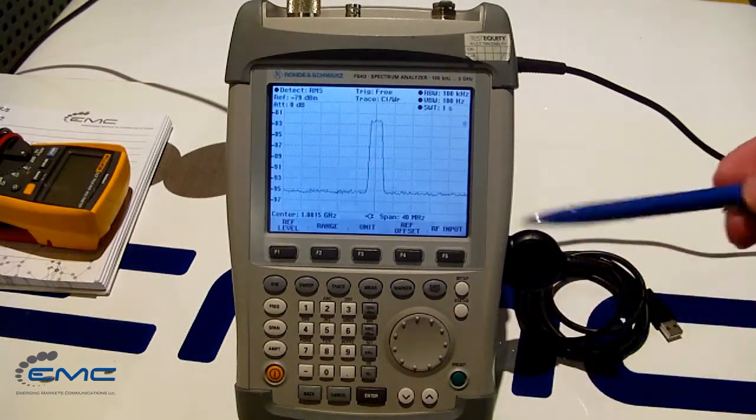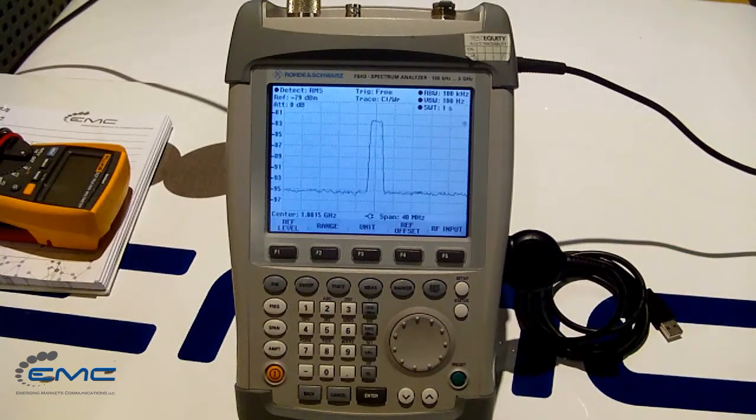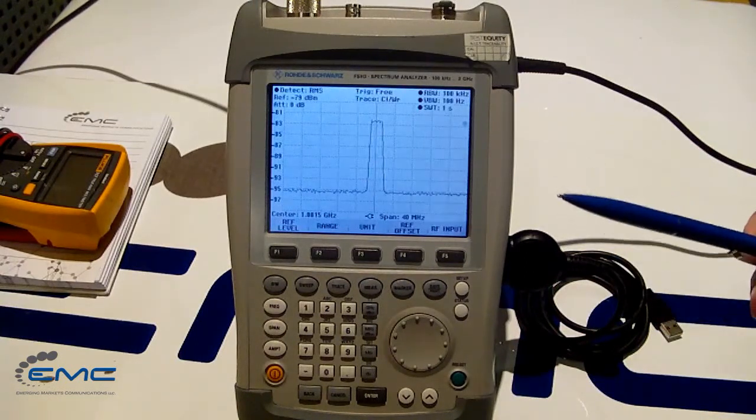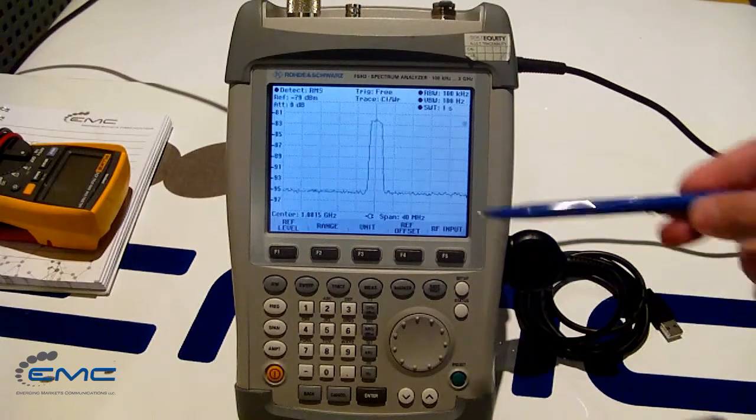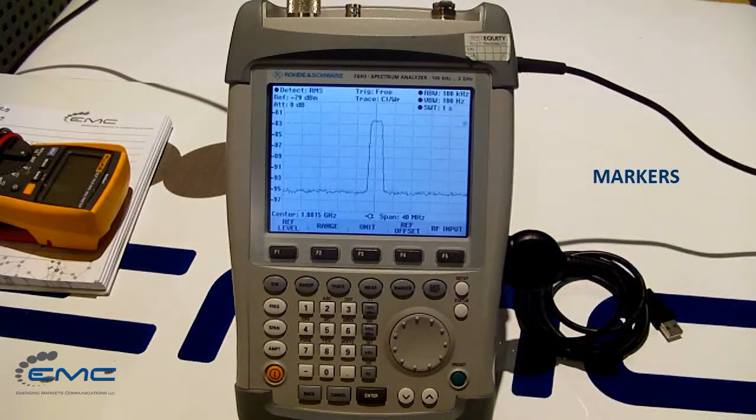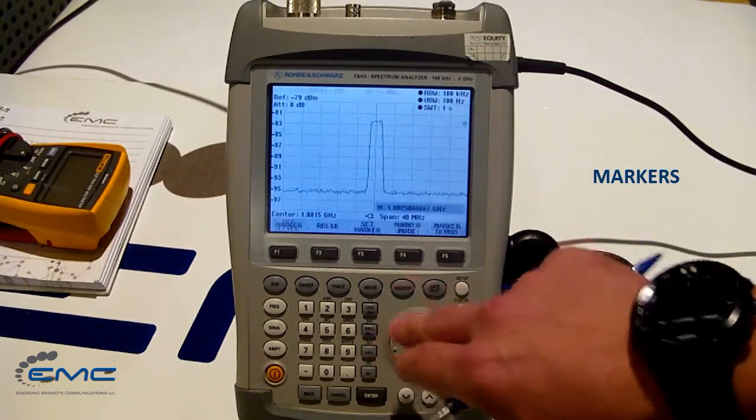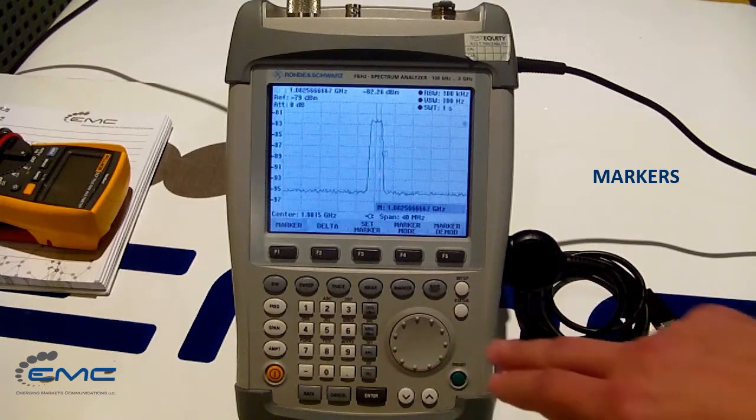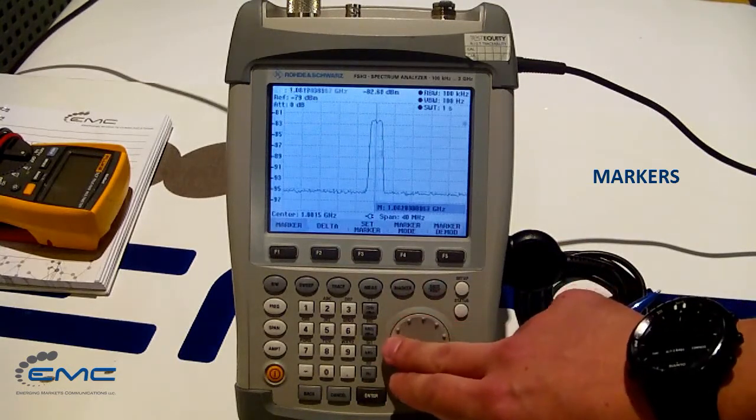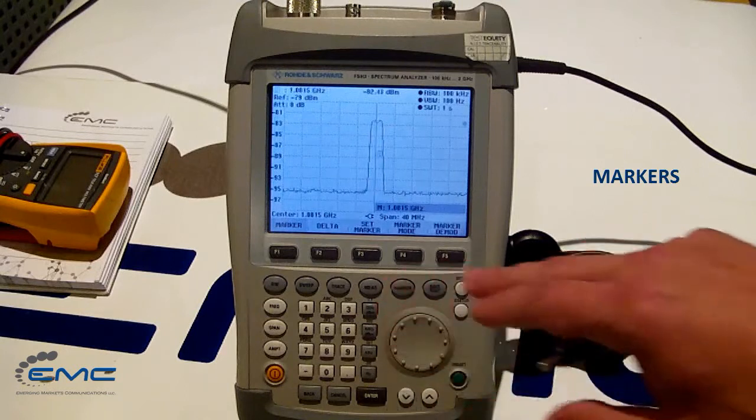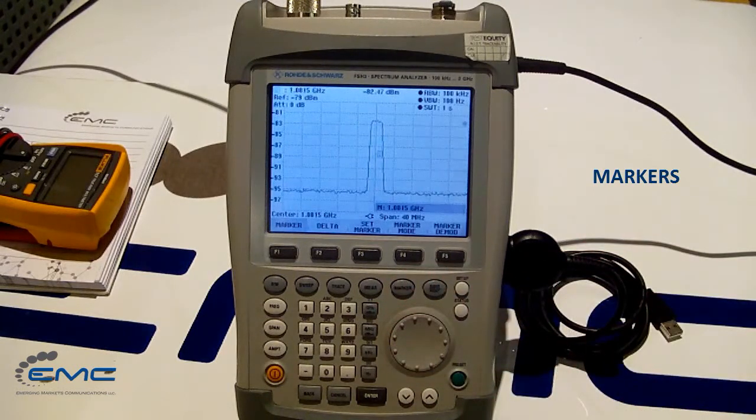So the last step you might probably need to set up is marker and measure carrier to noise level. To do so, just hit marker and put it to the central frequency, like here, or to the peak of the carrier if you want to measure.